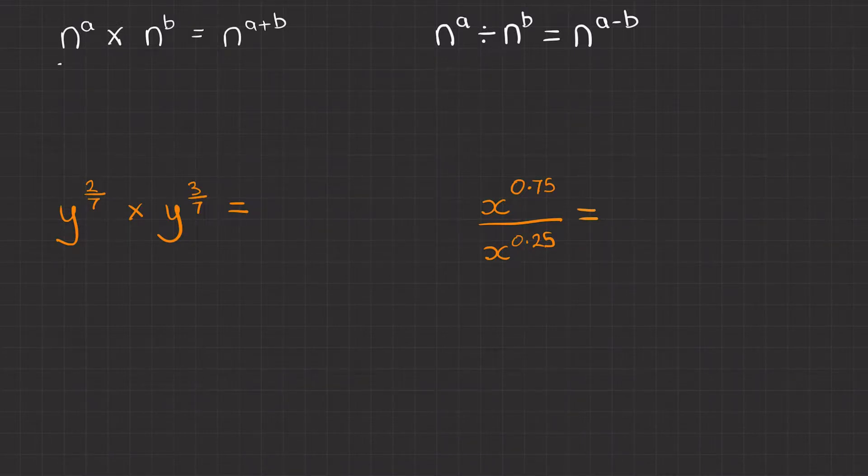For the first question we've got y to the power of 2 over 7 multiplied by y to the power of 3 over 7. We know it's going to be y to the power of something.